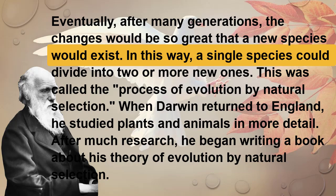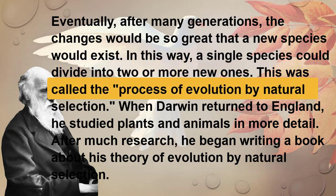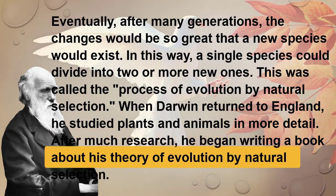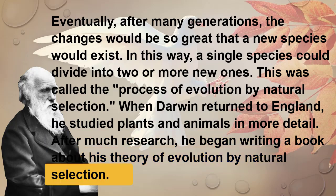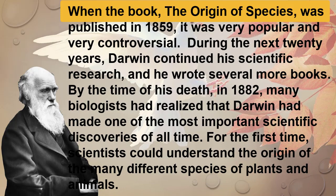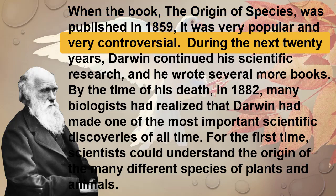Eventually, after many generations, the changes would be so great that a new species would exist. In this way, a single species could divide into two or more new ones. This was called the process of evolution by natural selection. When Darwin returned to England he studied plants and animals in more detail, and after much research he began writing a book about his theory. When the book, The Origin of Species, was published in 1859, it was very popular and very controversial.